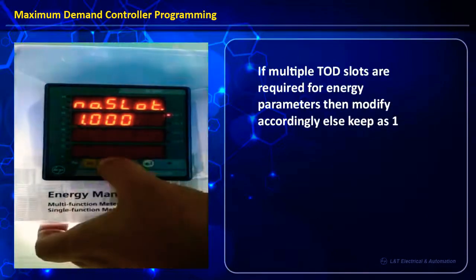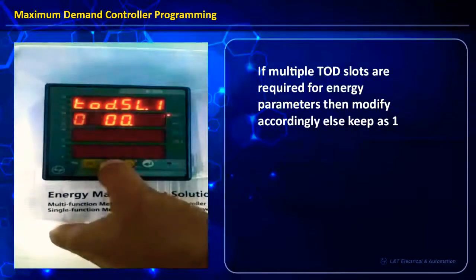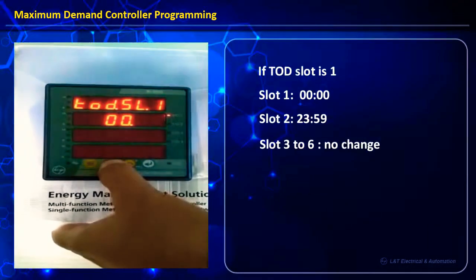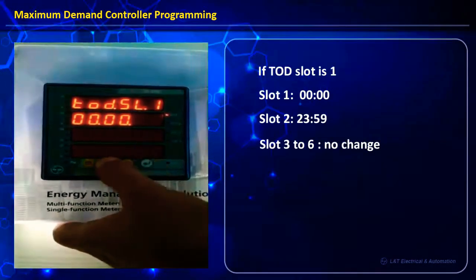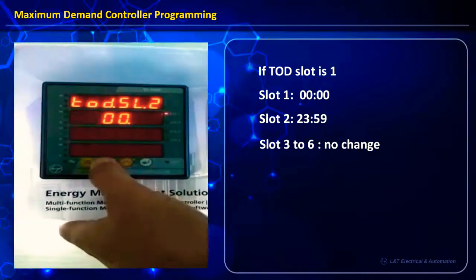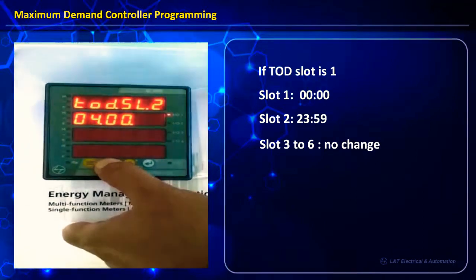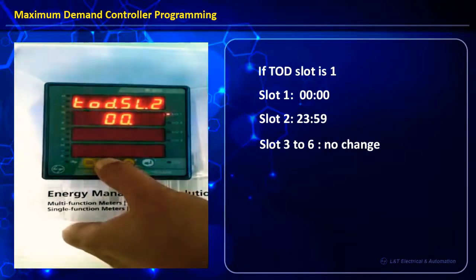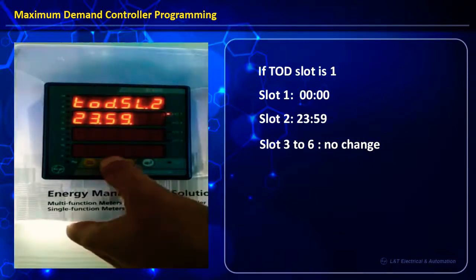Next we move to the energy slots. The number of slots can be set to just one, from 00:00 to 23:59. If required we can have up to 6 energy slots; in our case we have selected only one slot. For energy values as per TOD, we select from 00:00 to 23:59, and slots 3 to 6 will have no change.